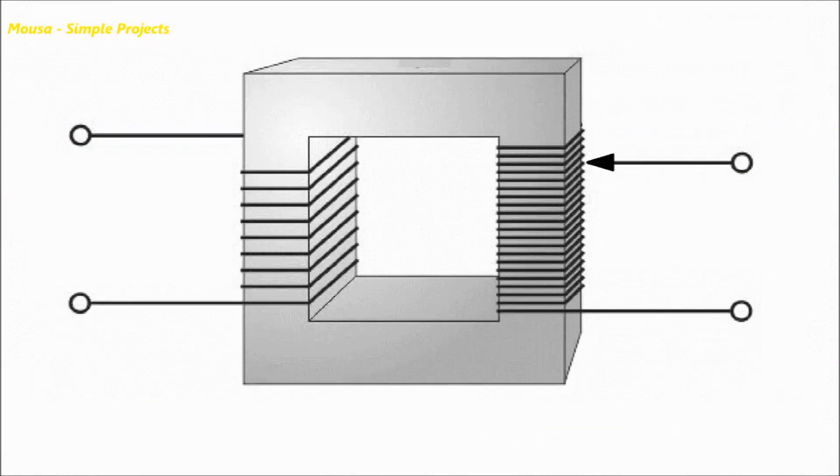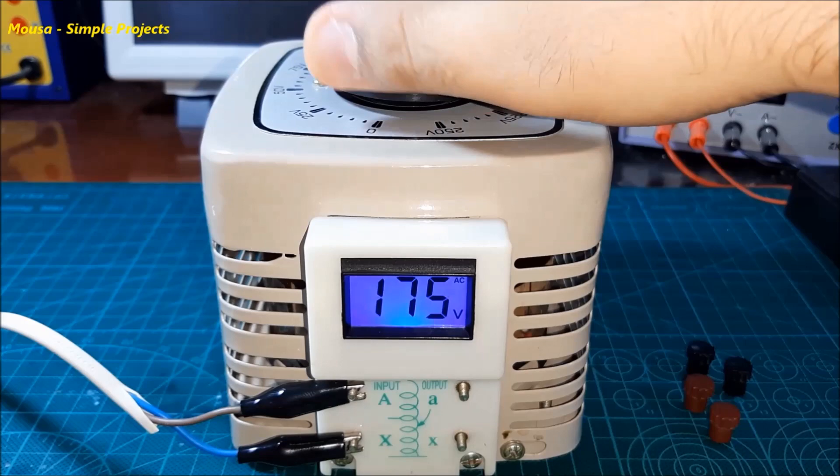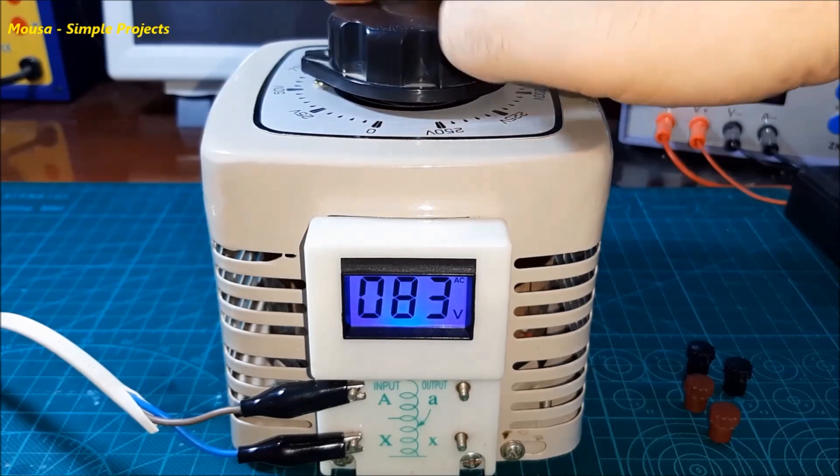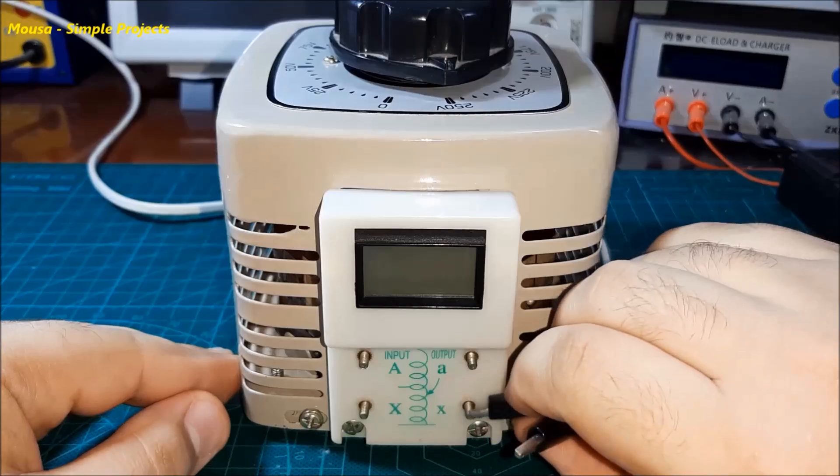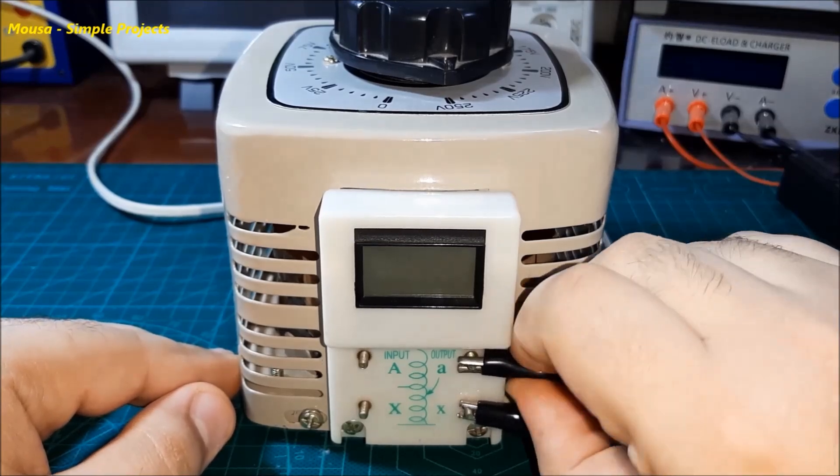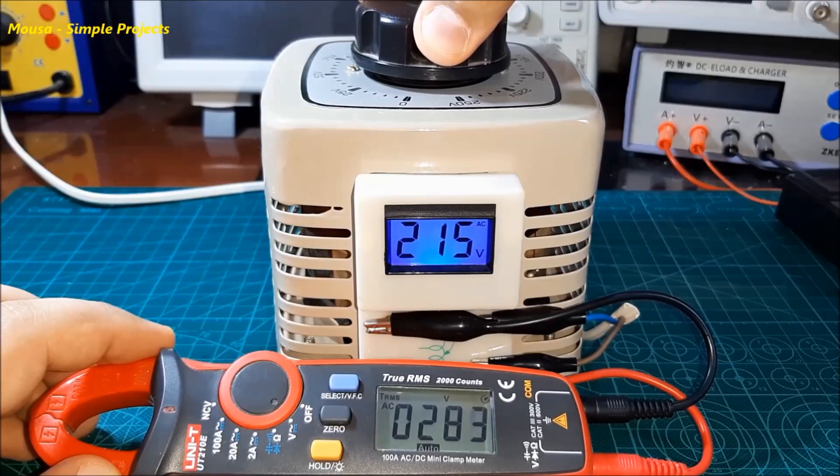In this case we have to use a variable transformer, so called auto transformer or variac. This auto transformer is usually used to step down the mains voltage for doing some tests. But if you connect the mains voltage at the output, it can increase the voltage.